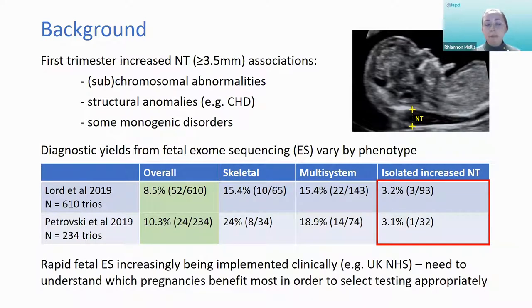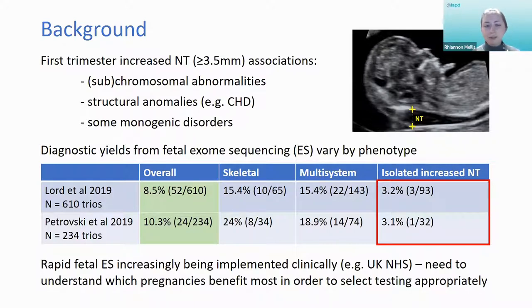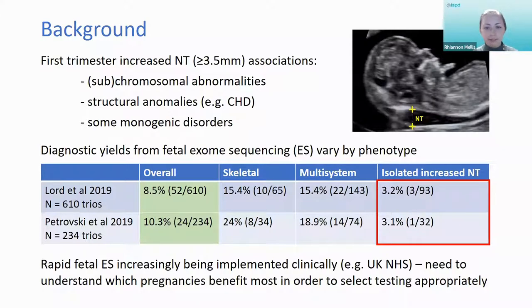Taking the two largest studies — the PAGE study (Lord et al.) and the Columbia study (Petrovsky) — the overall diagnostic yield in these studies, which sequenced fetuses with any abnormality, was between 8 and 10%. Breaking it down by phenotype, the highest diagnostic yields were seen in fetuses with skeletal or multisystem disorders, whereas isolated increased nuchal translucency had the lowest diagnostic yield of any group, coming out at around 3%. Rapid fetal exome sequencing is increasingly being implemented in clinical practice — for example, within the NHS in the UK there is now a diagnostic service across all of England offering it in certain circumstances.